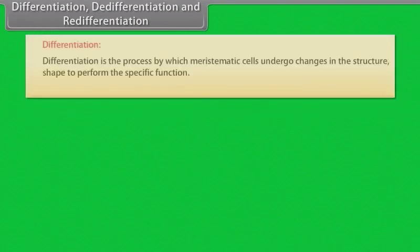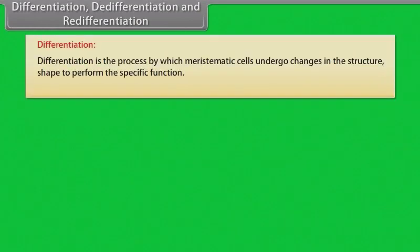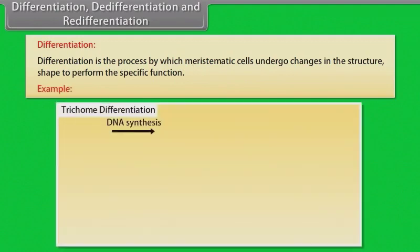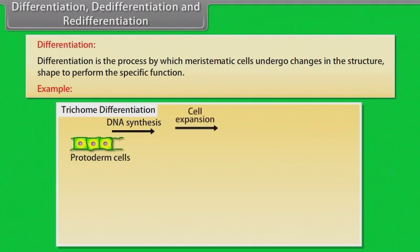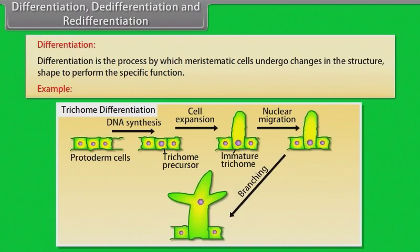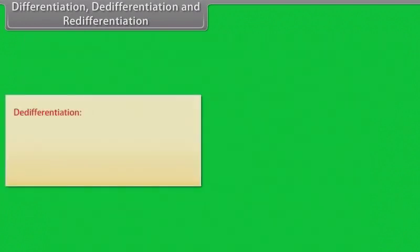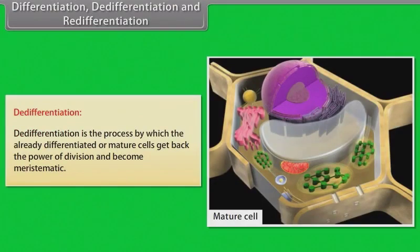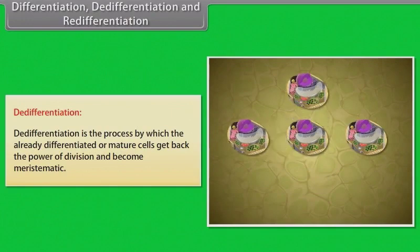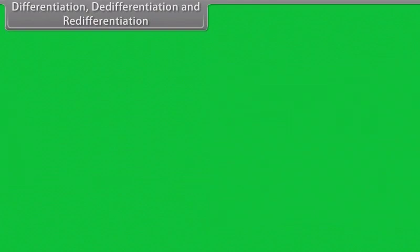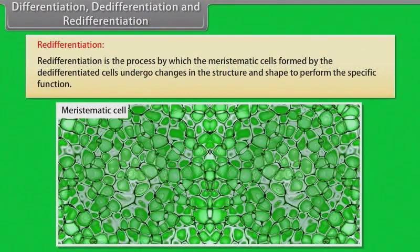Differentiation is the process by which meristematic cells undergo changes in structure and shape to perform specific functions. For example, after DNA synthesis of protoderm cells, cell expansion takes place and forms an immature trichome; then nuclear migration and branching occur, reaching the maturation stage. De-differentiation is the process by which already differentiated or mature cells get back the power of division and become meristematic. Re-differentiation is the process by which meristematic cells formed by de-differentiated cells undergo changes in structure and shape to perform a specific function.